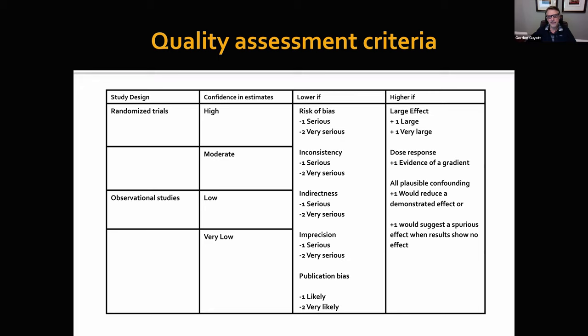Imprecision: we may have a number of randomized trials, but the sample sizes may be small in all of them — few events, wide confidence intervals — and that can lower our certainty. Finally, publication bias: if negative trials have been withheld and are not available, we can get biased estimates of effect.